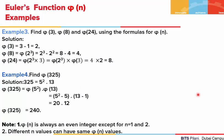Let us say we are asked to find phi(3), phi(8), and phi(24) using the formulas. To find phi(3), we use the first formula as 3 is prime: phi(3) = 3 − 1 = 2. To find phi(8), we write 8 = 2^3, so phi(8) = 2^3 − 2^2 = 4. To find phi(24), we write 24 = 2^3 × 3. As phi is multiplicative: phi(24) = phi(2^3) × phi(3) = 4 × 2 = 8.